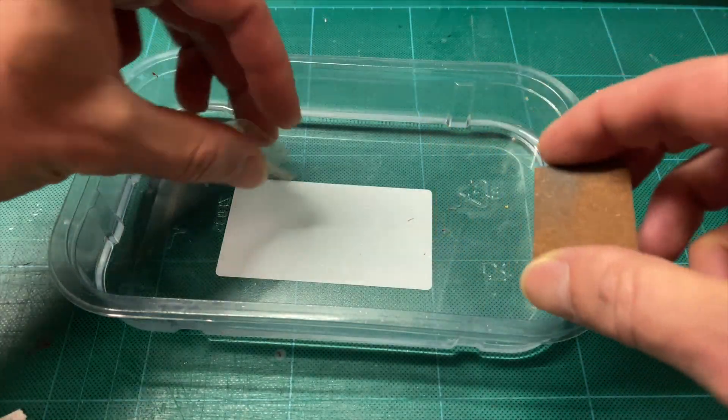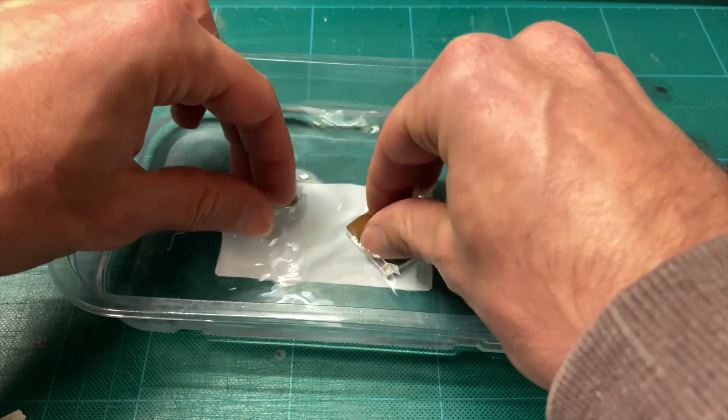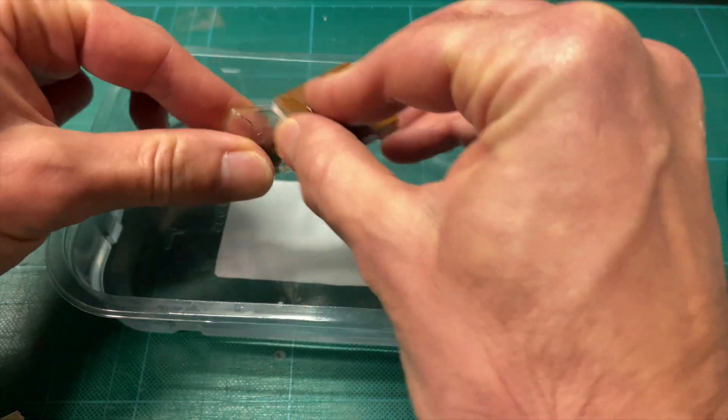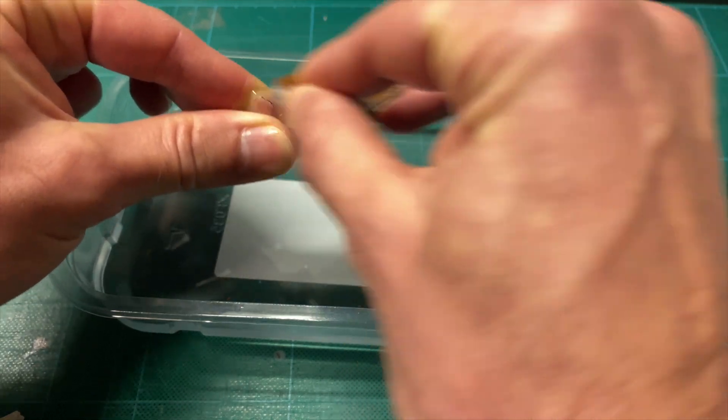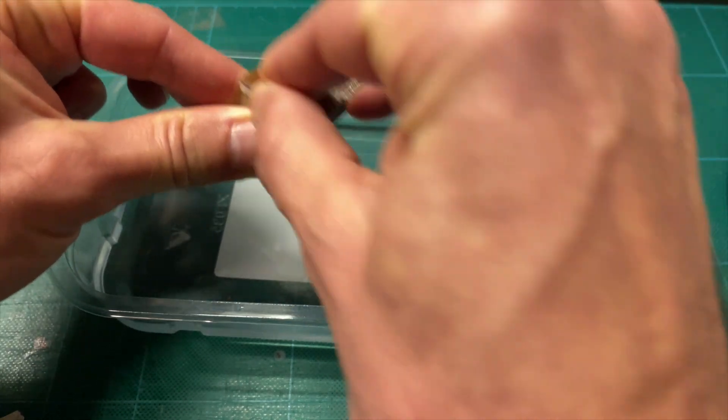I first start with the 1500 grid size to get rid of the deep scratches, paint and pen marks. Before I start sanding I submerge both the window unit and the micro mesh pad in water to smoothen the sanding process. I'll be doing this for all the steps that follow.